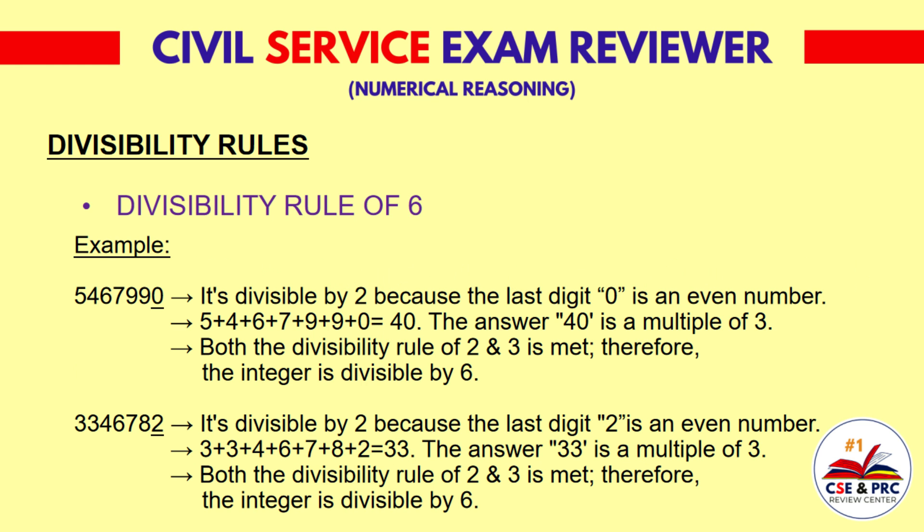Another example, 5,467,990 is divisible by 2 because the last digit 0 is an even number. 3+4+6+7+9+9+0 equals 40, which is not a multiple of 3. Another example, 3,346,782 is divisible by 2 because the last digit 2 is an even number. 3+3+4+6+7+8+2 equals 33, which is a multiple of 3. Both divisibility rules of 2 and 3 are met, therefore the integer is divisible by 6.